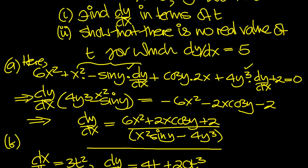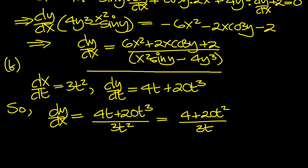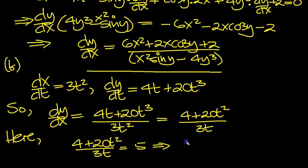Show that there's no real value of t for which dy/dx equals 5. So here, let this equal 5. 4 plus 20t squared over 3t equals 5. That implies that 4 plus 20t squared, move the 3t up, equals 15t.